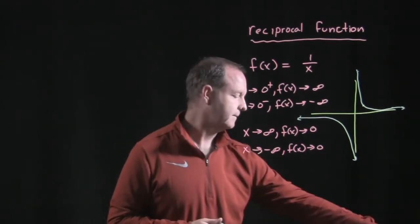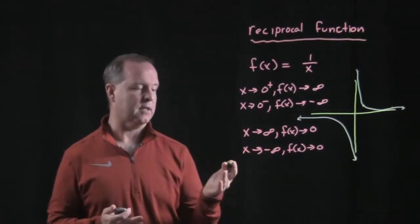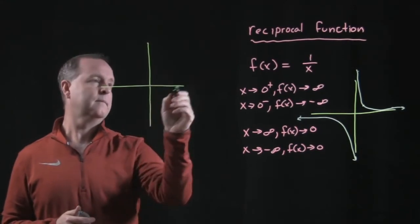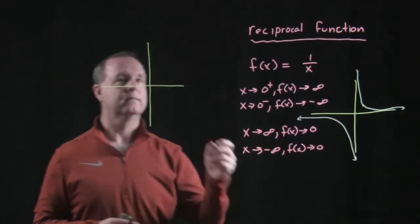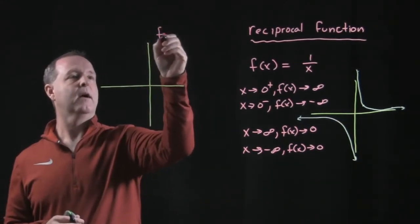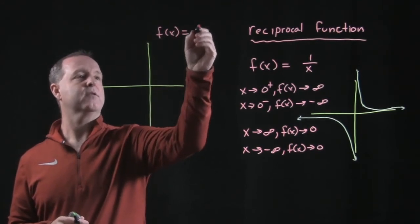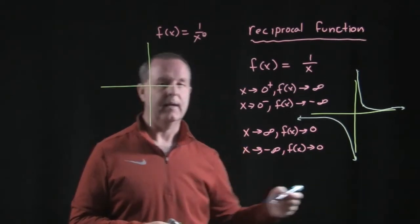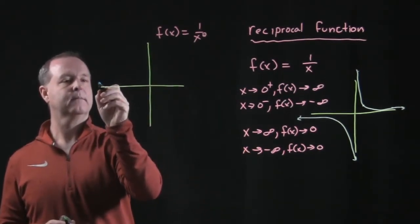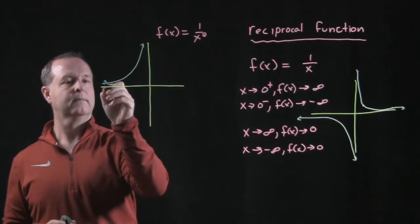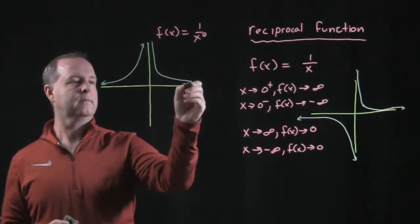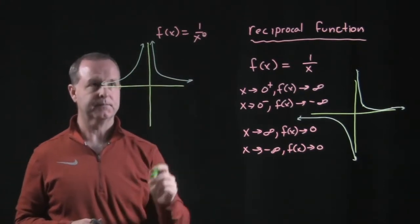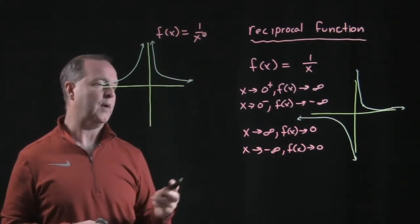Another graph that we might see that's a common or somewhat of a common graph would be a reciprocal graph, f of x equals 1 over x squared. And that graph has a graph that looks like that, symmetrical about the y axis. So it tells me it's an even graph.